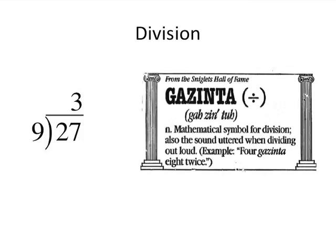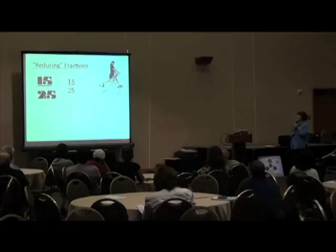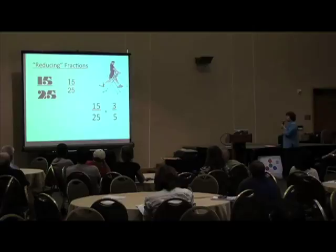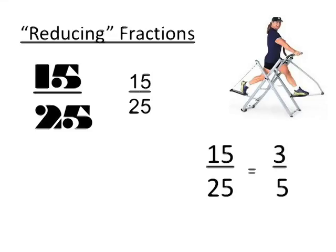Reducing fractions. So we have 15 25ths when we reduce it. Does it get smaller? Or, when we reduce it the way we're taught, because whatever you do to the numerator you gots to do to the denominator, is 3 5ths smaller than 15 25ths? I found this one on Google.